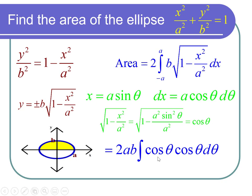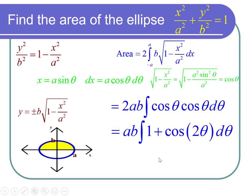The next step is to say well cosine squared of theta is one half times one plus cosine two theta and the one half and the two cancel. So we get ab times the integral of one plus the cosine of two theta d theta.